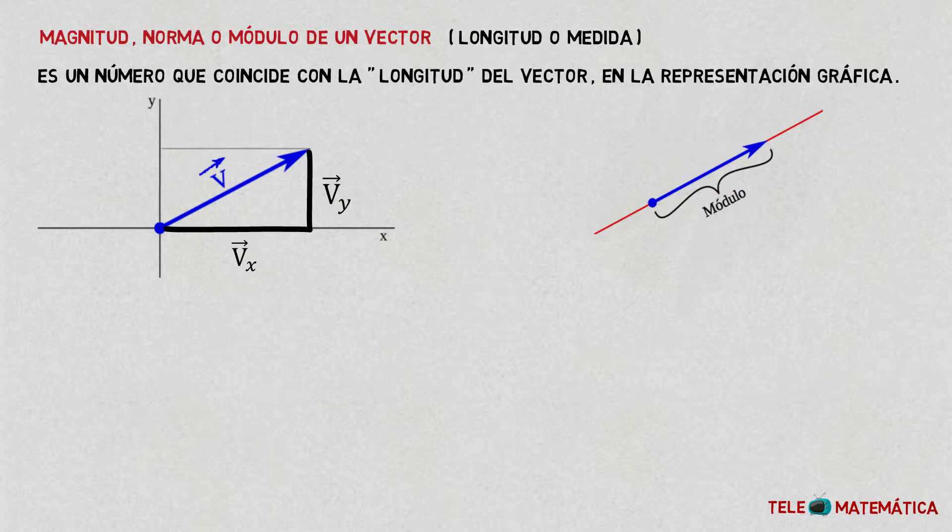Now, these three elements form a right triangle, so we can apply the Pythagoras theorem to calculate the length of the vector, which in this video we will not explain it in detail, but if you have any doubts about this topic, I will leave you the link in the description of the video where you explain how to use the Pythagoras theorem to see it.